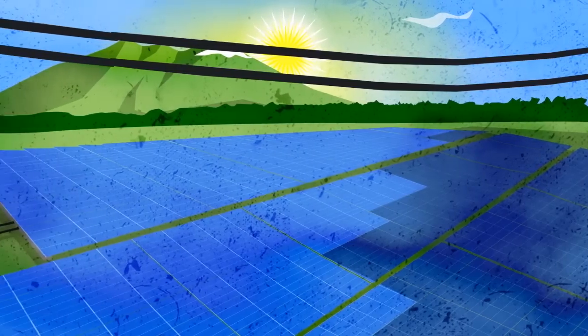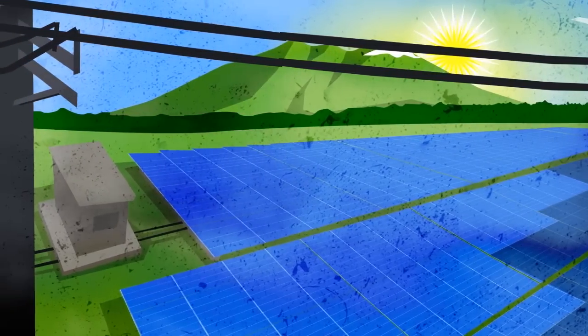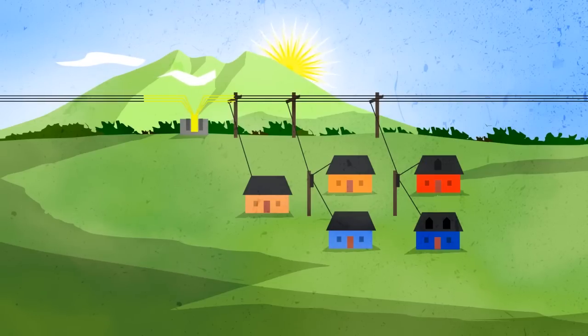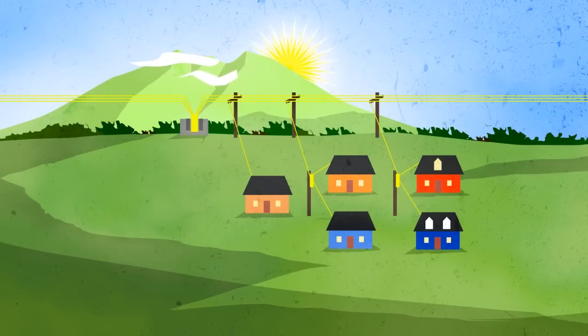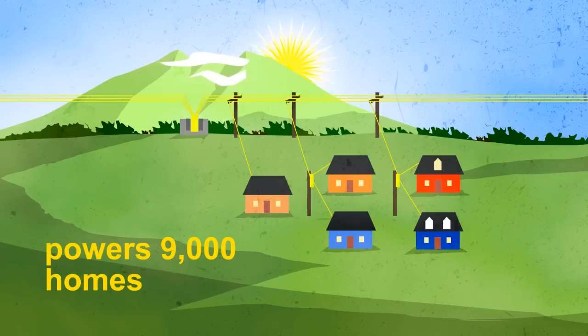This is how the Raslag solar power plant in Mexico, Pampanga works. It generates about 10 megawatts of electricity that can power almost 9,000 households or 5 barangays.